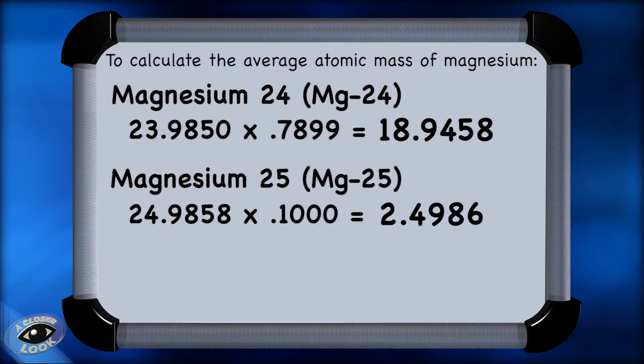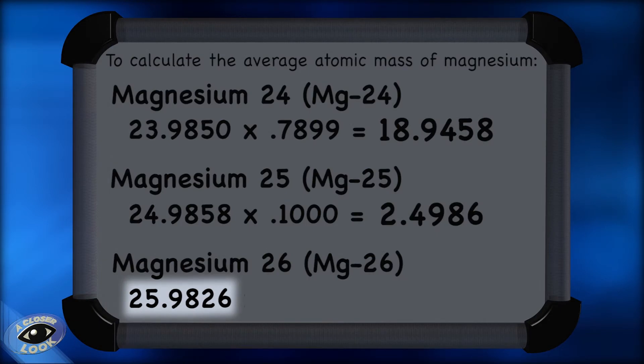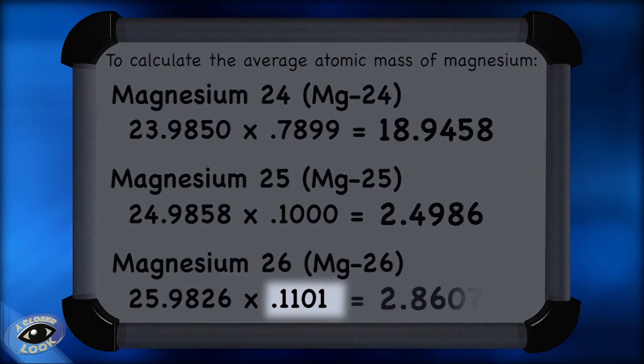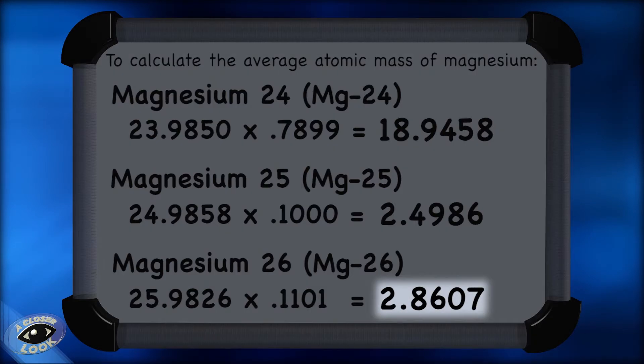For the third isotope, magnesium-26, with a mass of 25.9826 AMU, we take 25.9826 times the percent abundance in decimal form, which is .1101, and we get 2.8607.